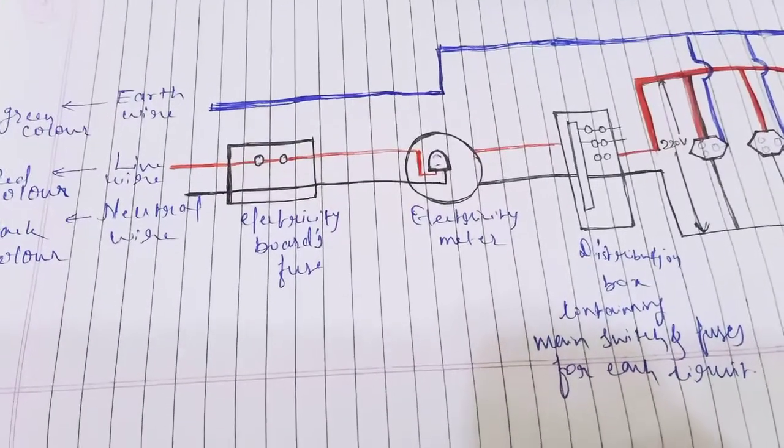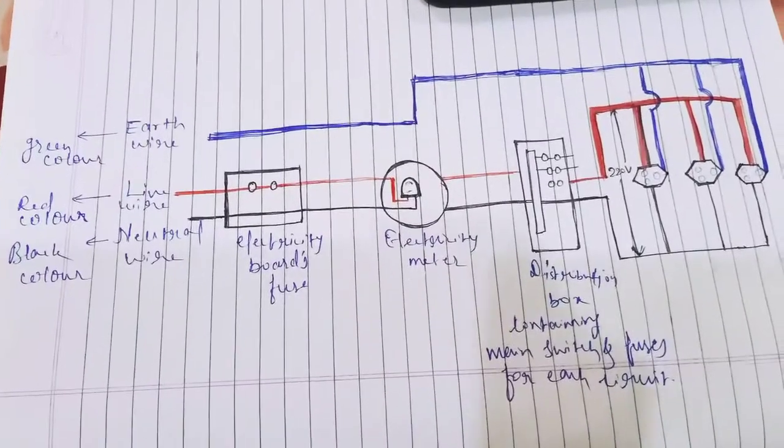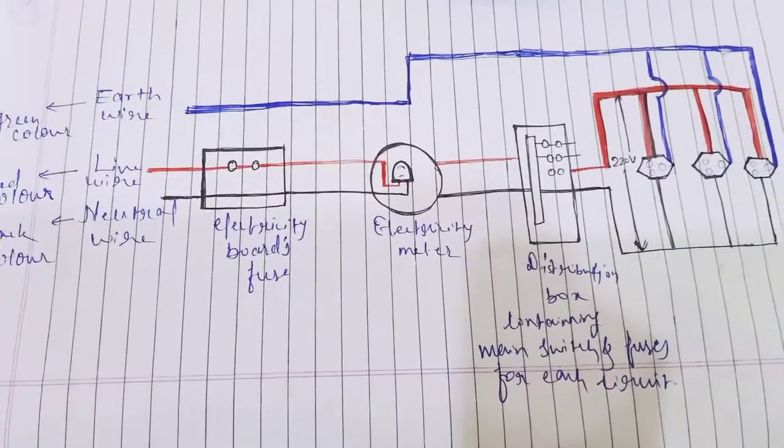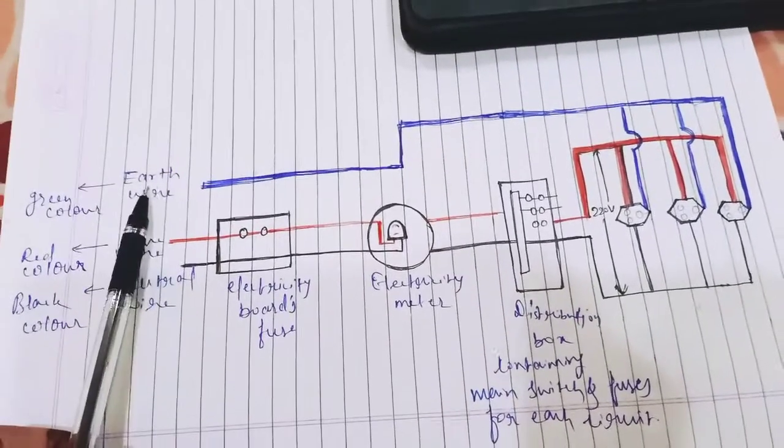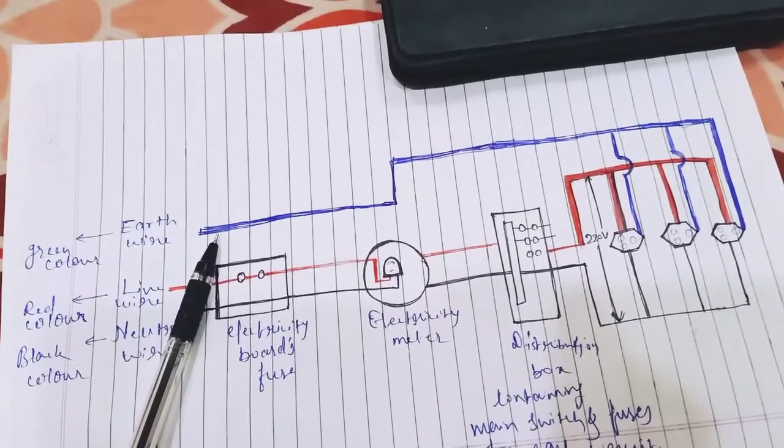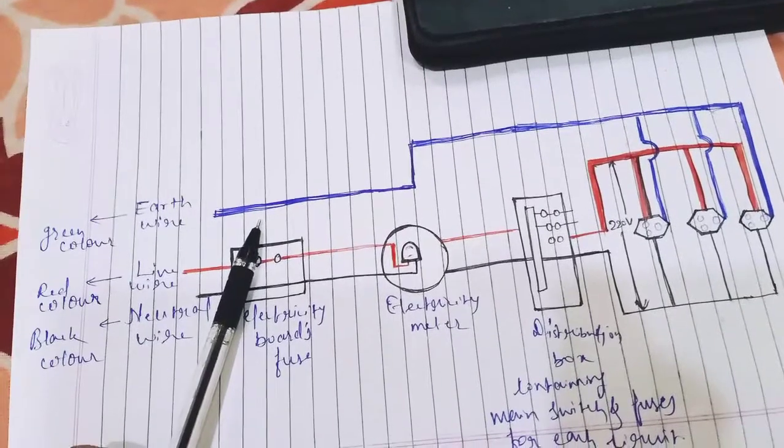This is the diagram of a domestic electric circuit. You can see this diagram looks like this type. This is the earth wire, it is insulated by green color. But I didn't have a green pen, so I've indicated it with blue pen. It can also be bluish green.